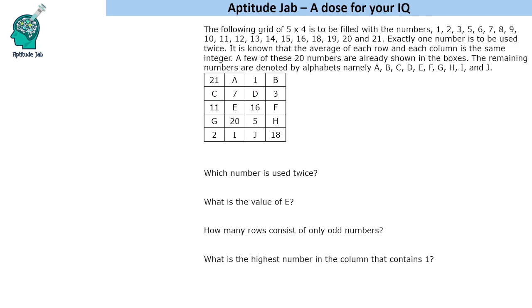Before we begin, let us find the total of the numbers that are to be filled. The sum of first 21 numbers is equal to 21 into 22 by 2, that is 231.